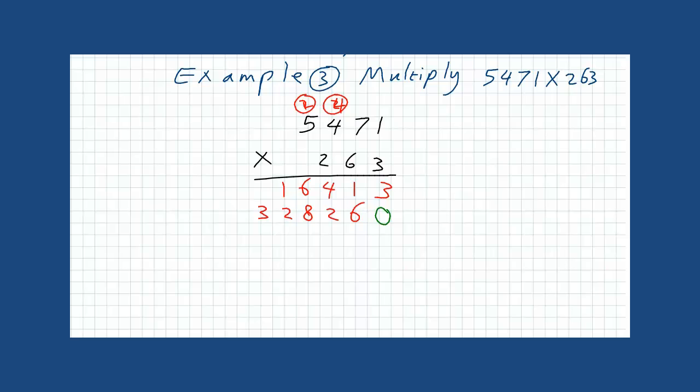Now, we will start multiplying the hundreds. But first, we will put two 0s. So, we will begin putting the answer starting from the hundreds. 2 times 1 is 2. 2 times 7 is 14. 1 in the hand. 2 times 4 is 8. Plus 1, 9. 2 times 5 is 10.